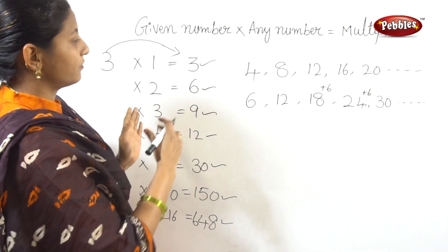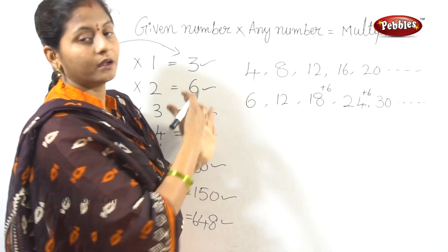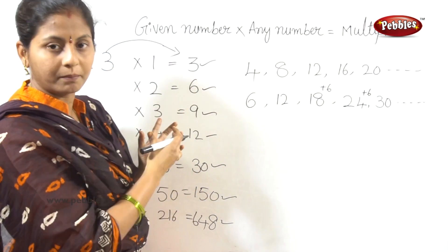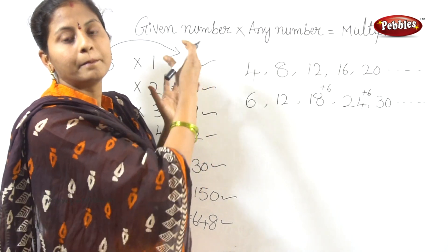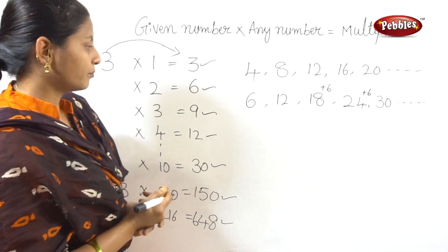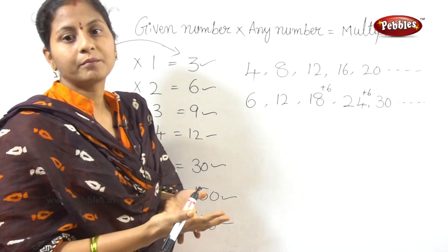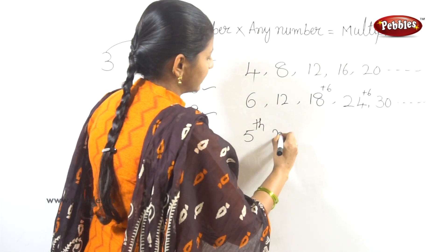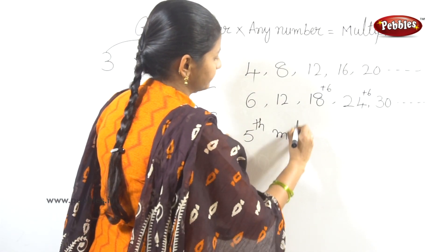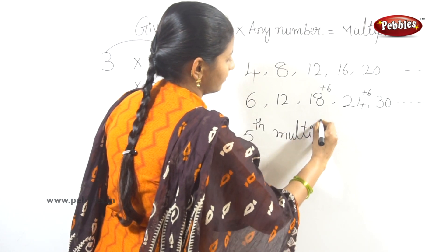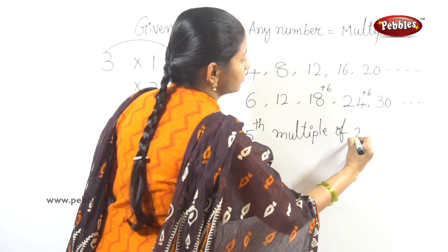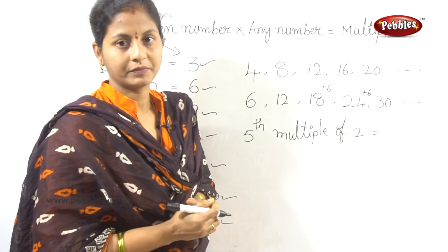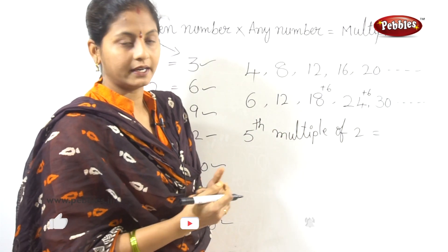The numbers which are obtained by multiplying a given number — if we have a number, we can multiply by any numbers to get its multiples. For example, the 5th multiple of 2.